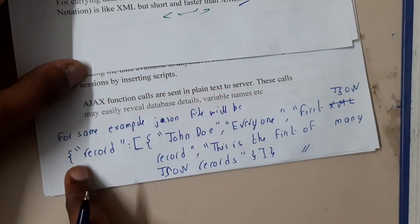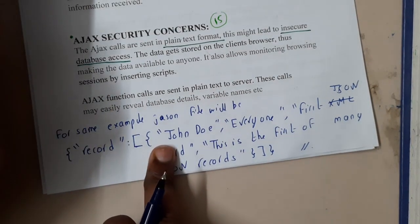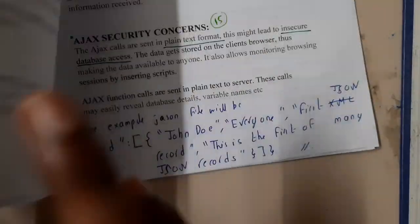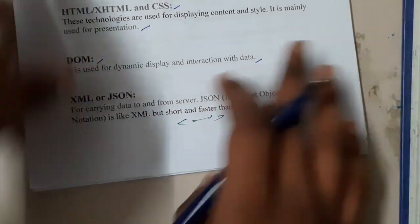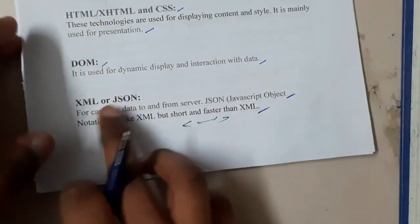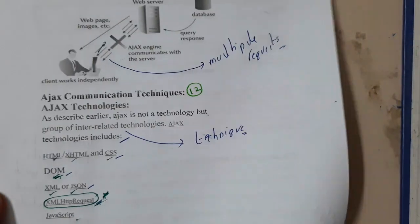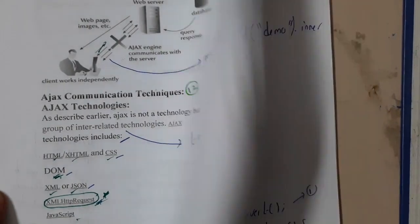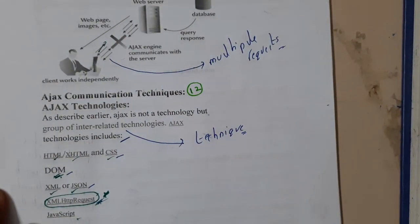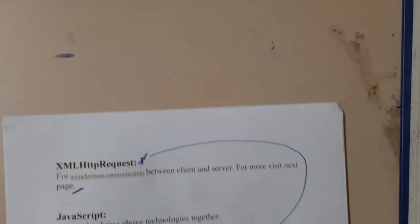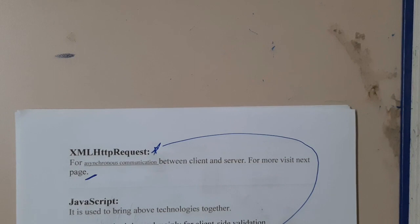We'll be going through XML and JSON in the next lectures with examples, so don't worry. For now, just assume that XML and JSON are used for carrying data. They are really fast when compared to any other data transfer mechanisms. After that, let us go through XMLHttpRequest.